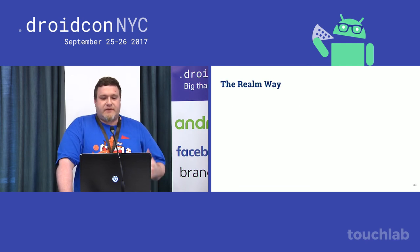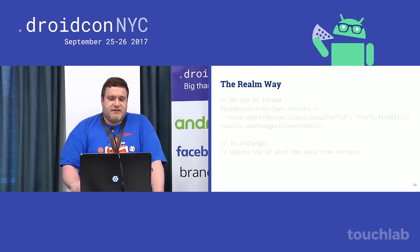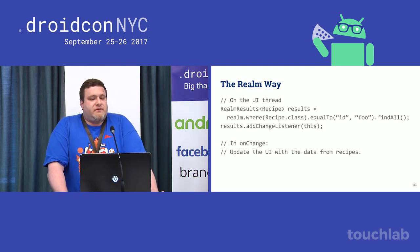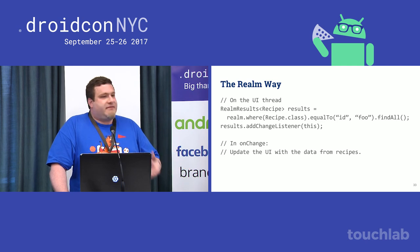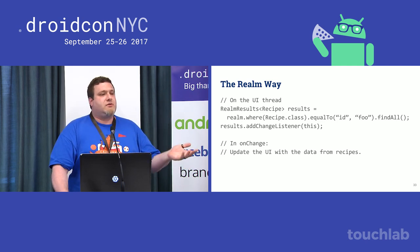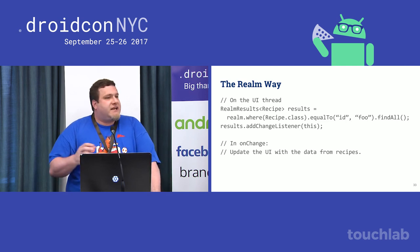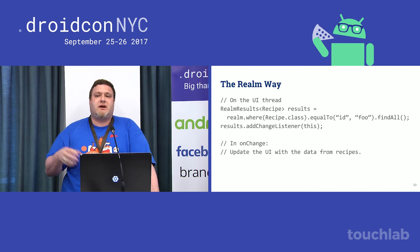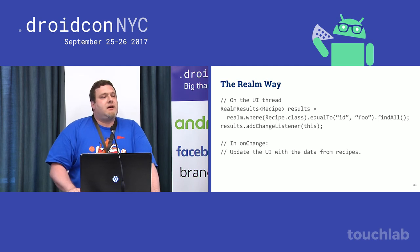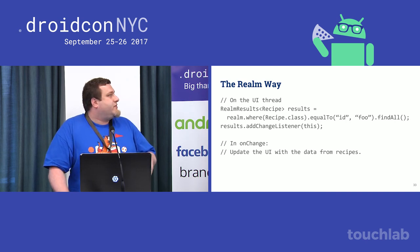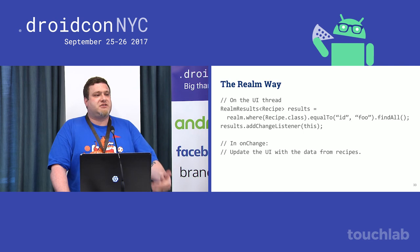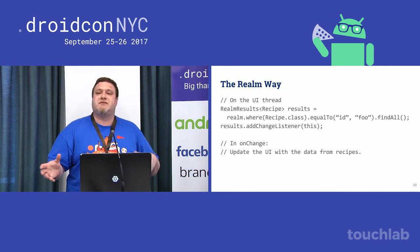The preferred way to handle this in Realm is to do a query for all your recipes with the relevant ID — that gives you back a RealmResults list with either zero or one element. You then add a change listener, and that listener will be invoked whenever the contents of that query would change. Once onChange is invoked, you can update your UI because that's when Realm has actually copied your data between the two different realms. And the other cool thing is that you don't actually have to re-query your data once you get onChange — it's live, the data is already there. You just have to refresh your UI to refer to the new data.